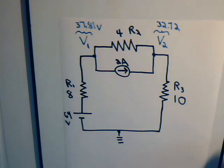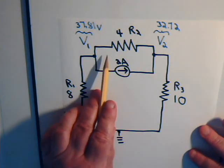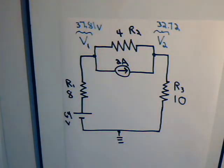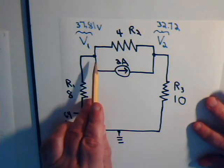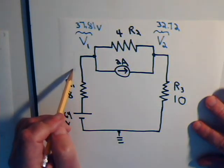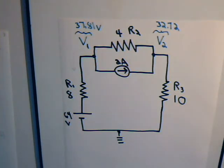The unknown currents, in each case, we assumed were flowing away from node 1. So we were assuming, for example, that there was a current going in this direction through resistor R1.